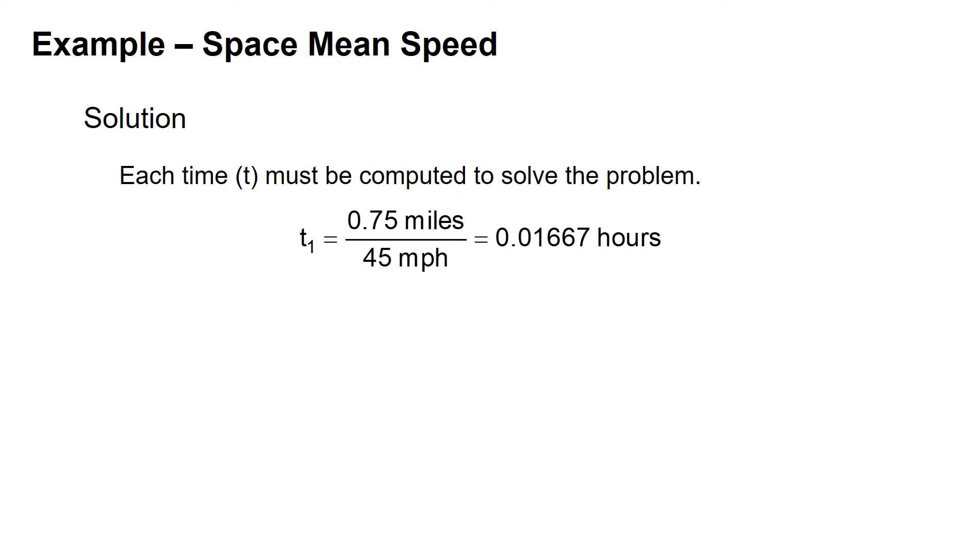The first thing we have to do is each time must be computed to solve the problem, so we need to find that travel time. This assumes that those speeds are consistent over that entire 0.75 mile segment. We're going to divide the distance by the speed, so 0.75 miles divided by 45 miles per hour gives us a T1 of 0.01667 hours.